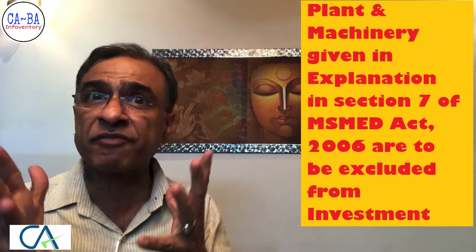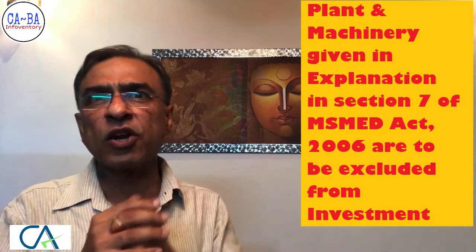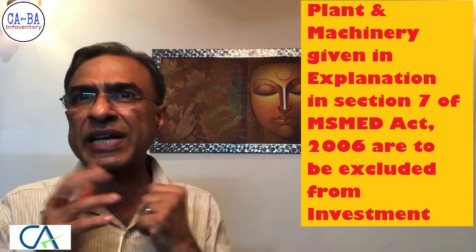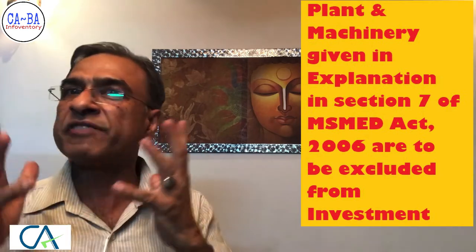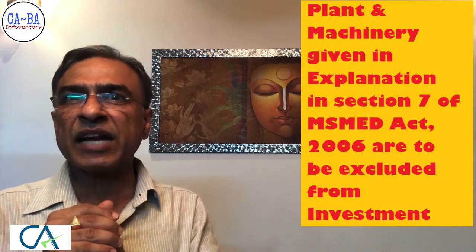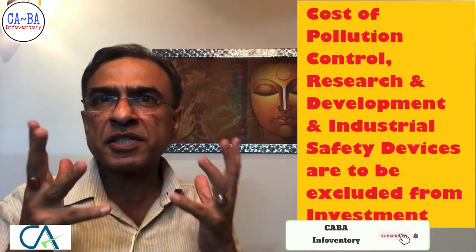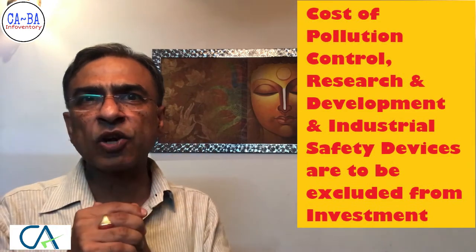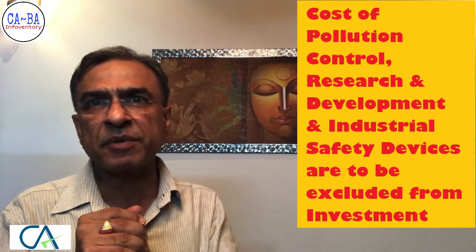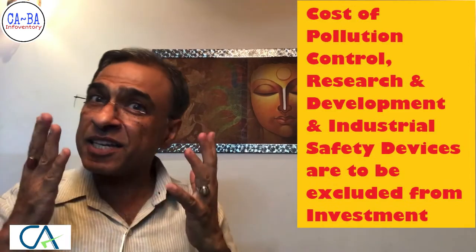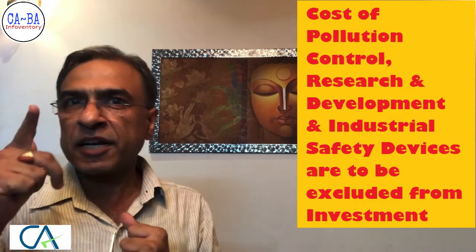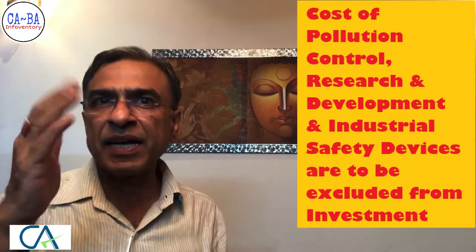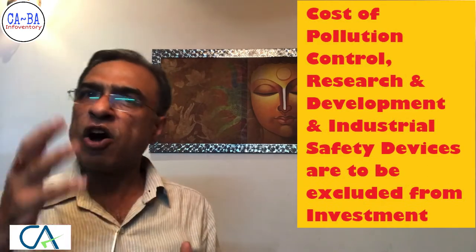Please note that for calculating investment in plant and machinery, an enterprise must still exclude items as per the explanation given in Section 7 of the MS-MED Act 2006, as that exclusion still exists and has not been removed. The items to be excluded are: cost of pollution control, research and development, industrial safety devices, and such other items as may be specified by notification. These three specific items are still to be excluded from the value of investment in plant and machinery while determining whether an enterprise is micro, small, or medium.